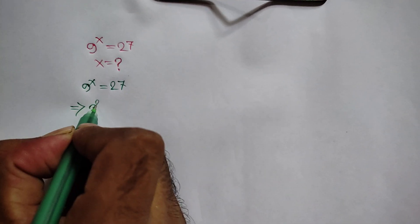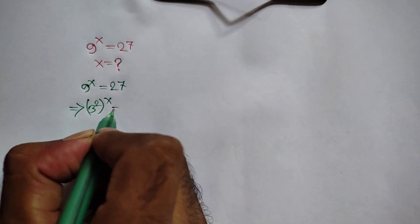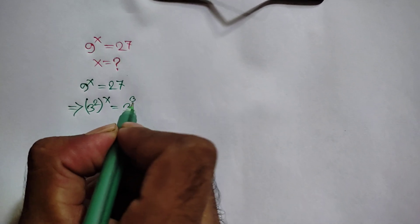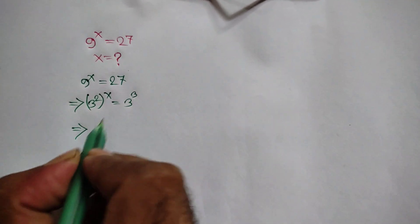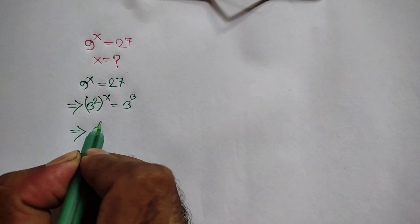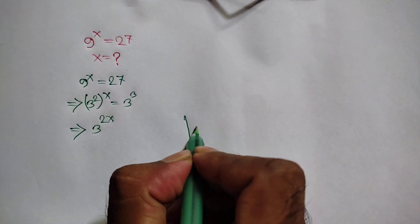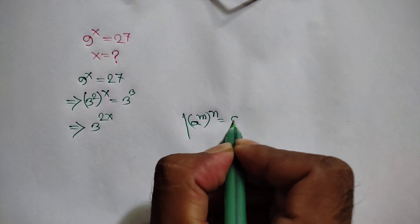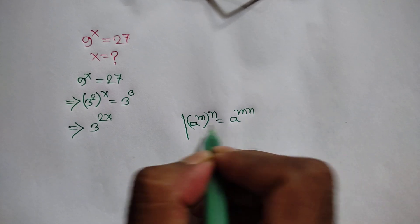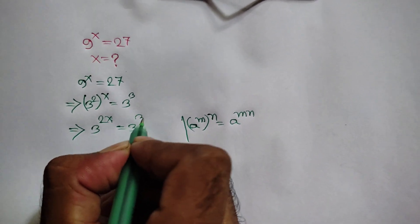Here we can write 3 squared, because 3 squared is the same as 9, to the power x, is equal to here we can write 3 cube, because 3 cube is the same as 27. Or we can write here 3 to the power 2x, because the exponent rule is: a to the power m, whole to the power n, is equal to a to the power mn. After this rule, here we can write 3 to the power 2x is equal to 3 cube.